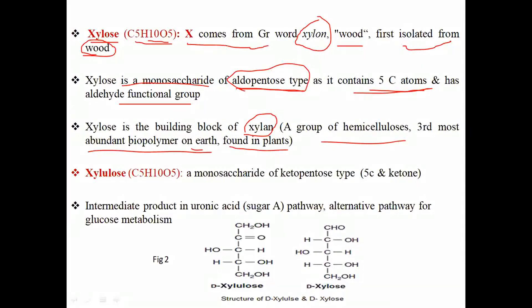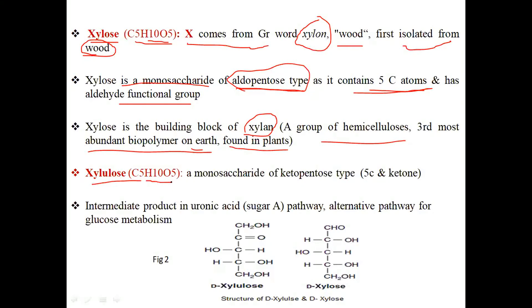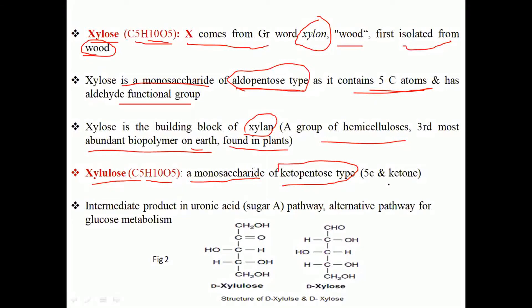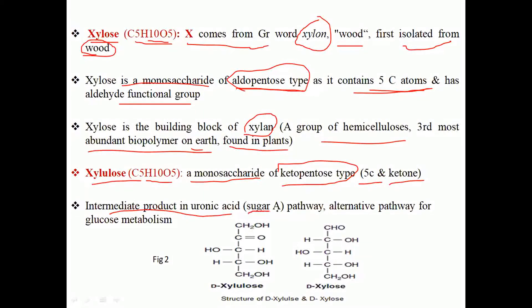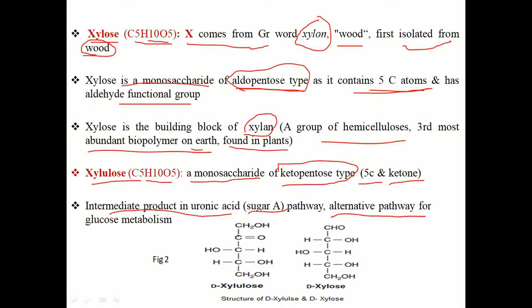Next is xylulose. It has the same molecular formula as xylose, but the difference is the functional group. Xylulose is a monosaccharide of the ketopentose type — 'keto' means it has a ketone functional group and 'pentose' means it has five carbon atoms. Xylulose is an intermediate product in the uronic acid pathway, which is an alternative pathway for the metabolism of glucose.